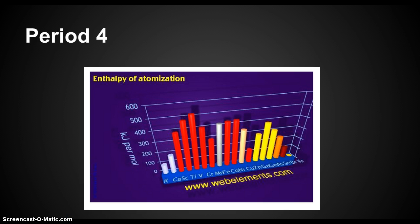Here's period 4. The elements go in order, like in the periodic table, from left to right. The numbers on the side represent the joules per mole for each element. Vanadium has the highest joules per mole, and krypton has the lowest.